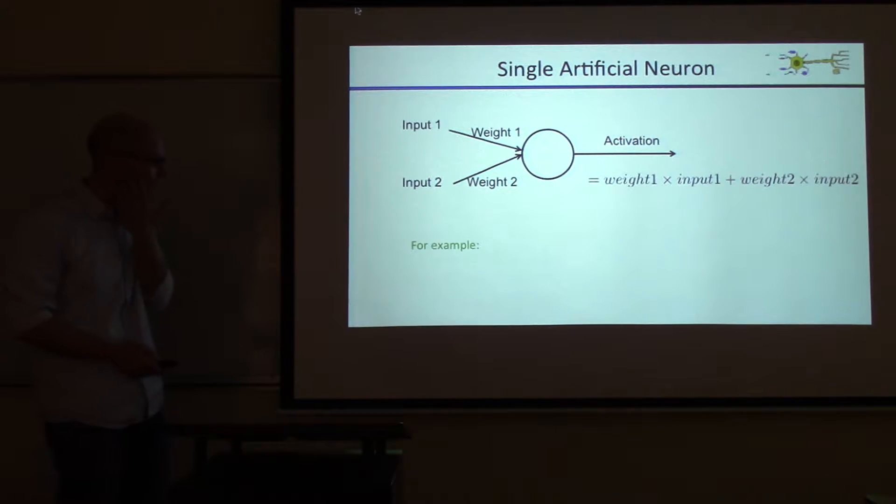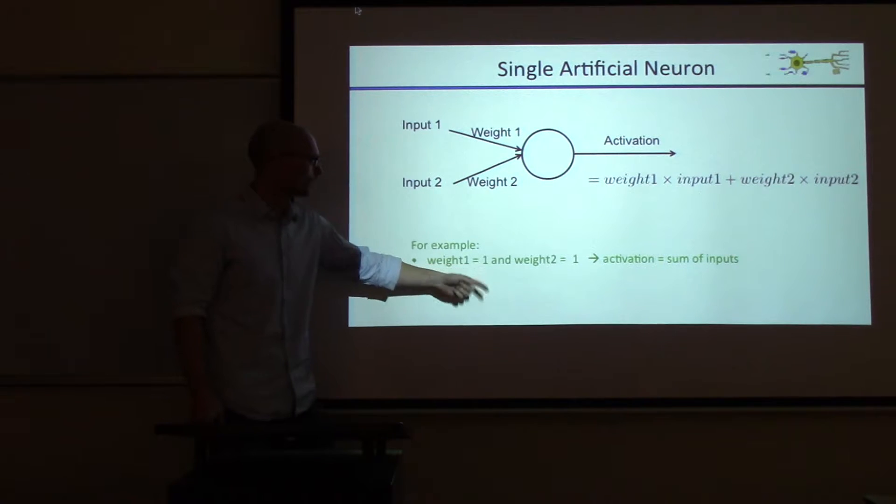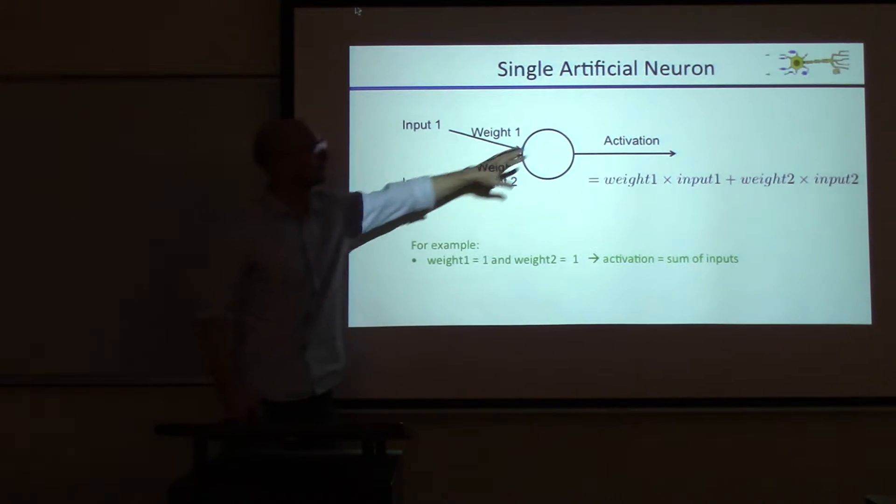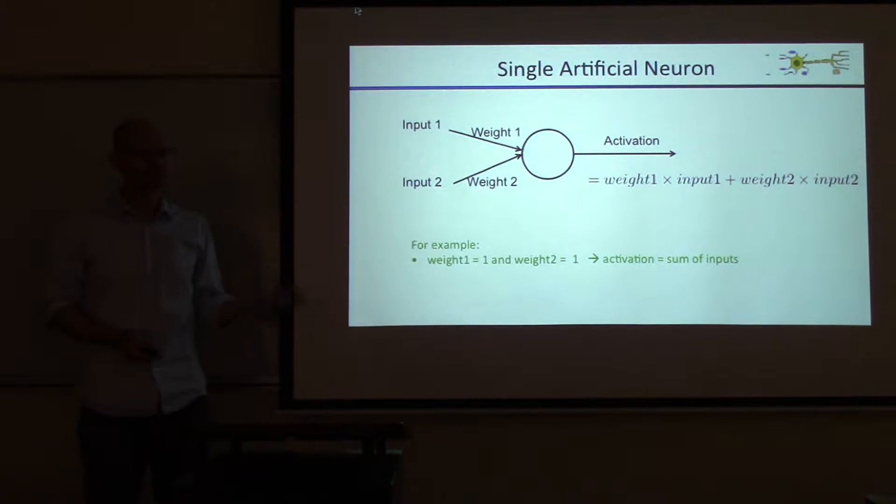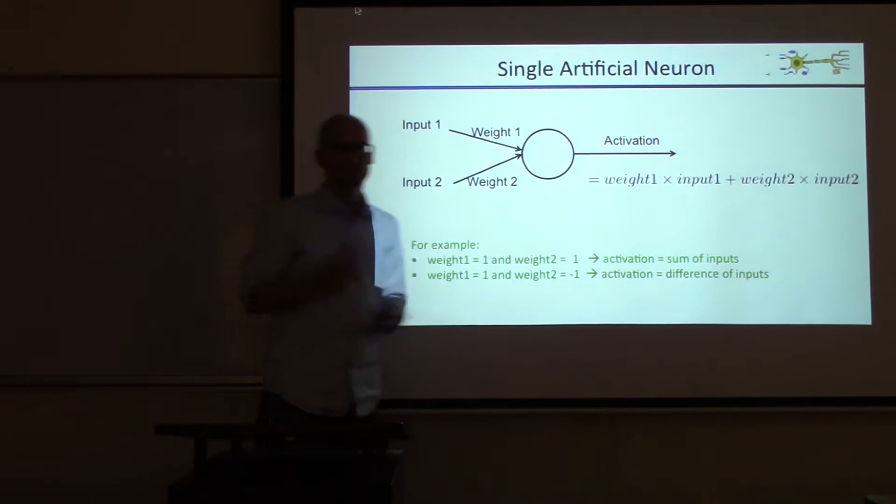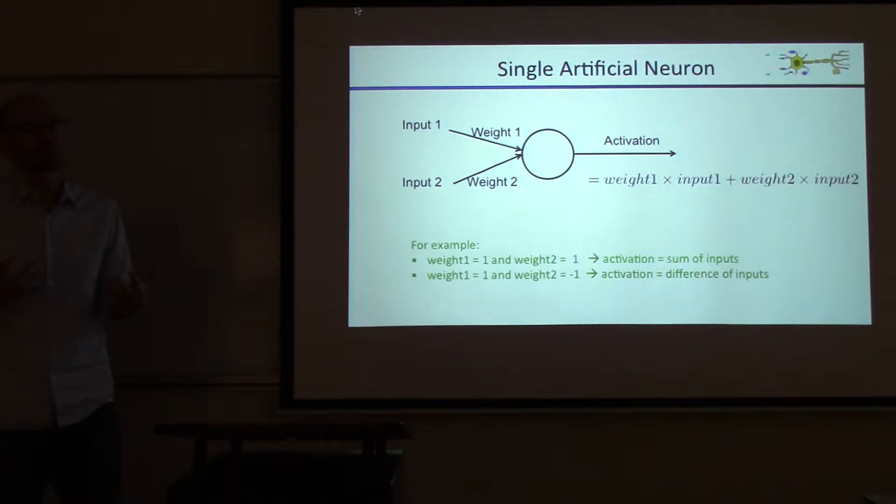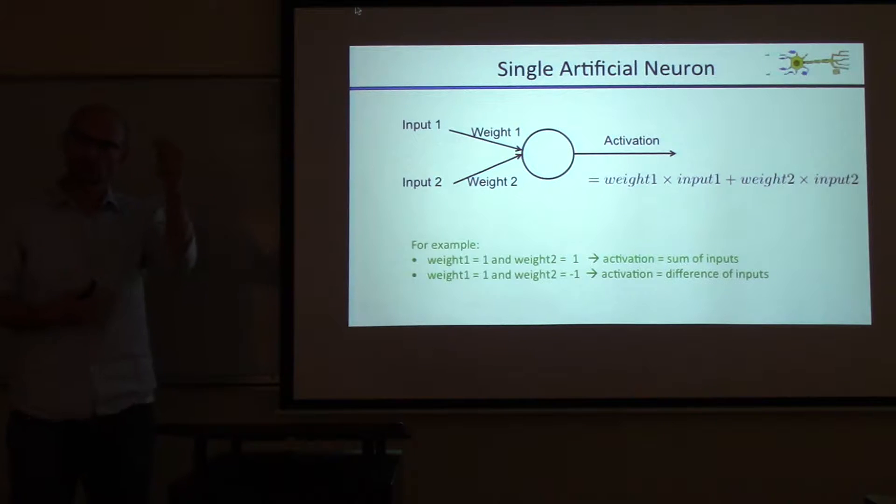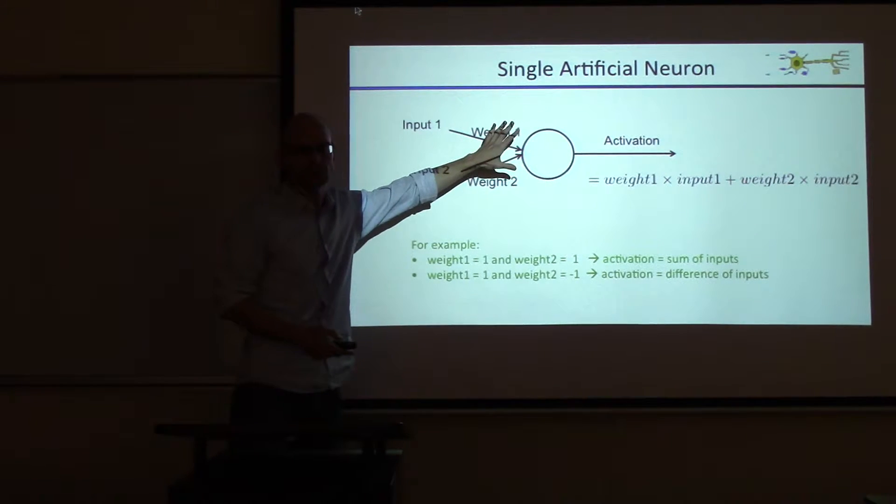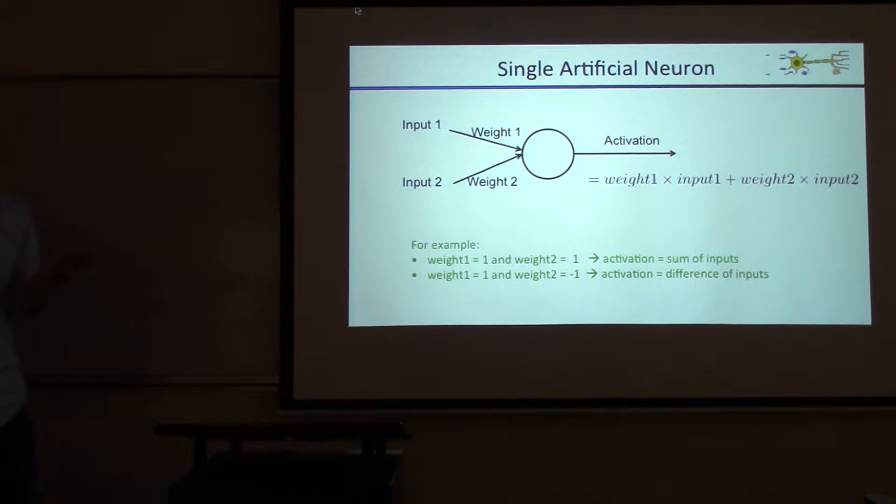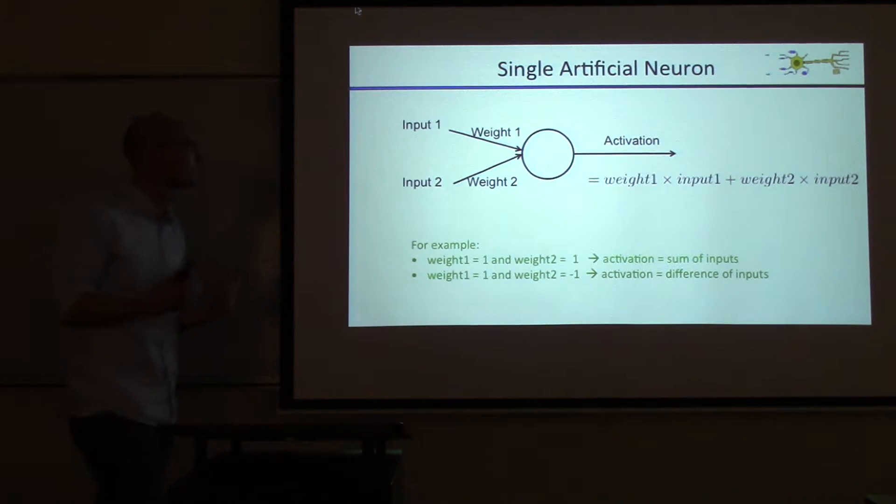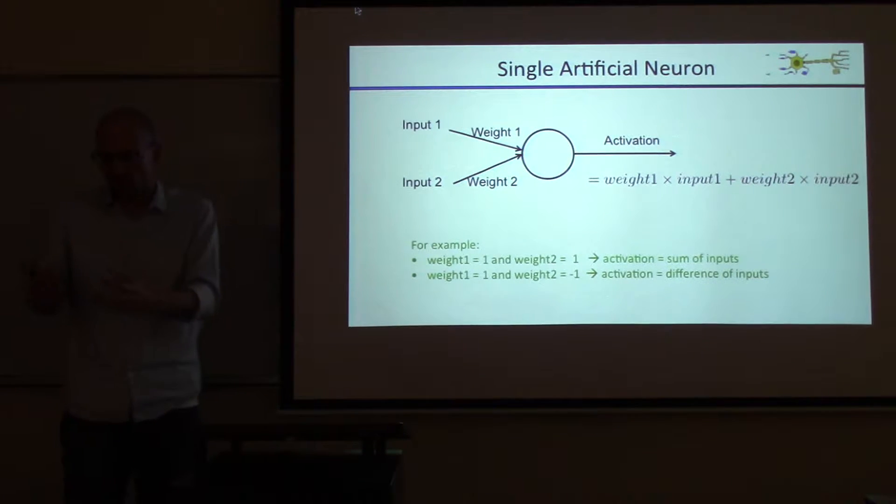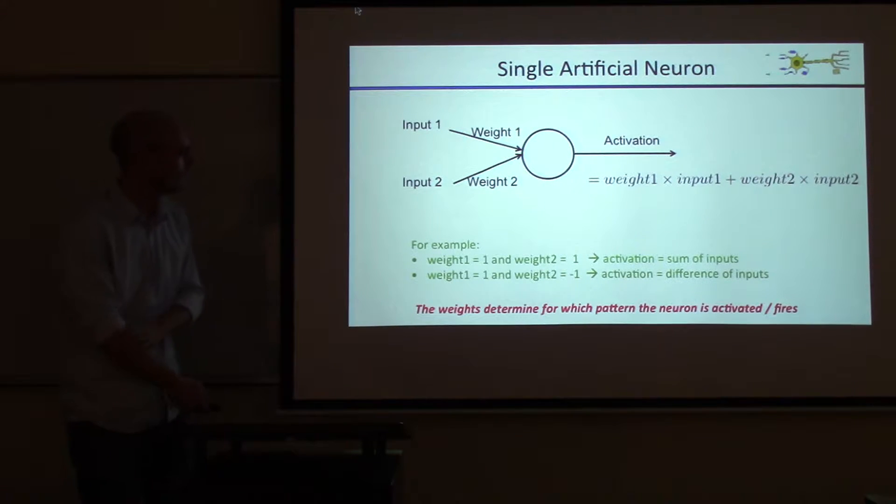Let's look at an example. Let's say you set weight one equal to one and weight two equal to one. Then this unit is computing the sum of the two inputs. If weight one equals one and weight two equals negative one, then you compute the difference between the two inputs. These are just two choices. You can put any number there for the weights. The magic is that this neuron will choose on its own what it's going to compute.